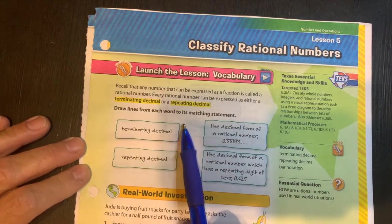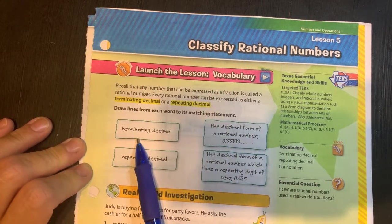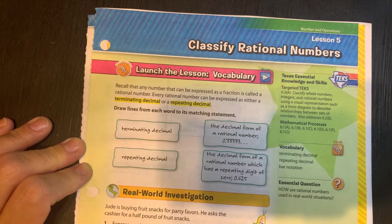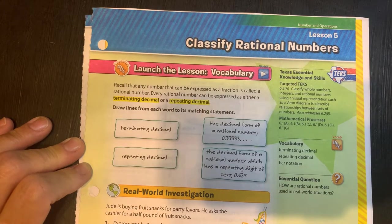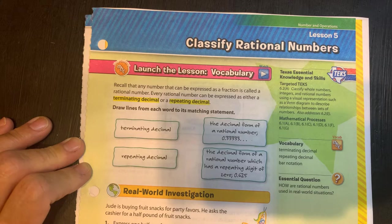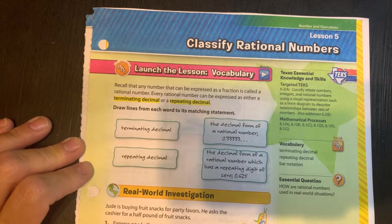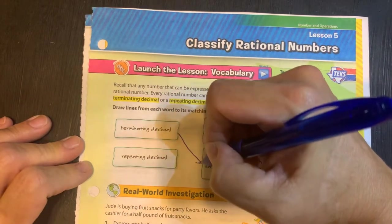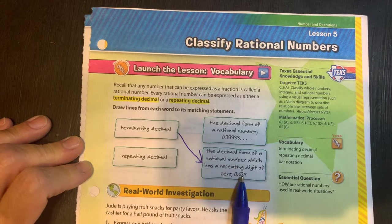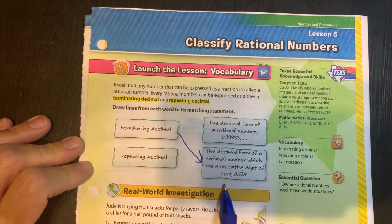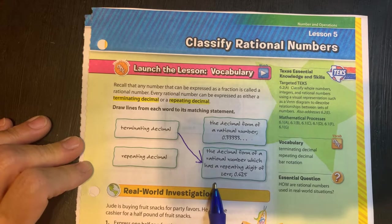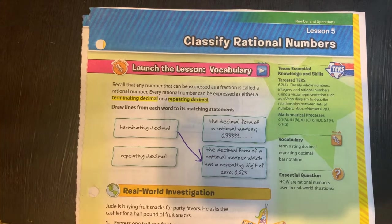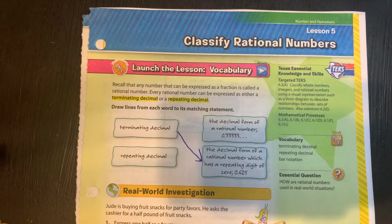Let's take a look at this. It says draw lines from each word to its matching statement. A terminating decimal is going to be one that is going to end. This is kind of a little odd, but they're saying that your terminating decimal is the decimal that has a repeating digit of zero. That's one way to look at it. I always think of a terminating decimal as one that ends. It doesn't repeat. It doesn't keep going.